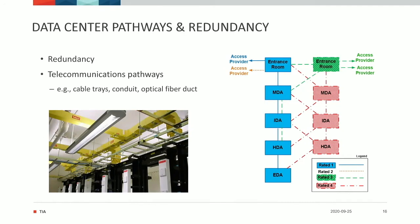For data centers, we have to cover things like pathways, which are cable trays, conduits, optical fiber ducts, and other types of pathways that are supporting the data center. We also provide guidelines in the data center standard for how to design redundancy in the cabling and the pathways for various levels of redundancy or ratings of the data center.